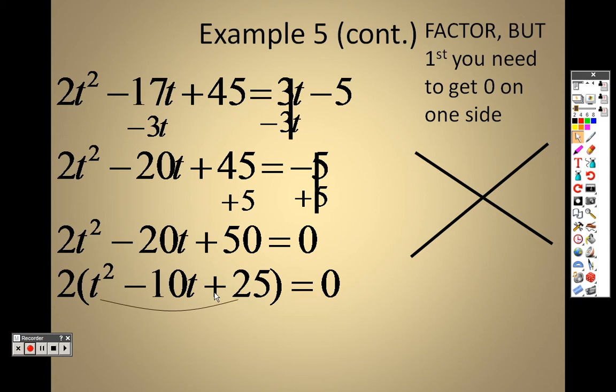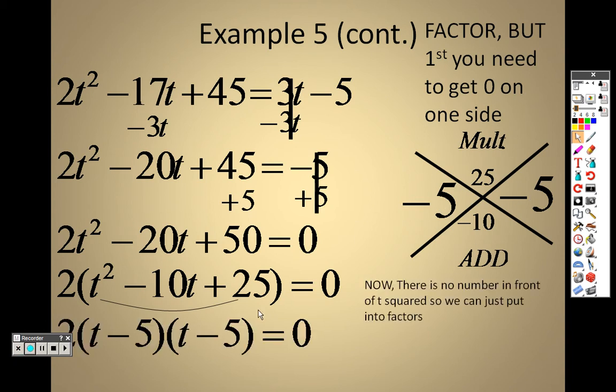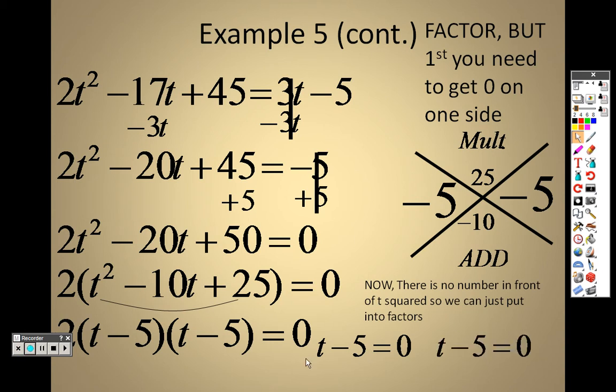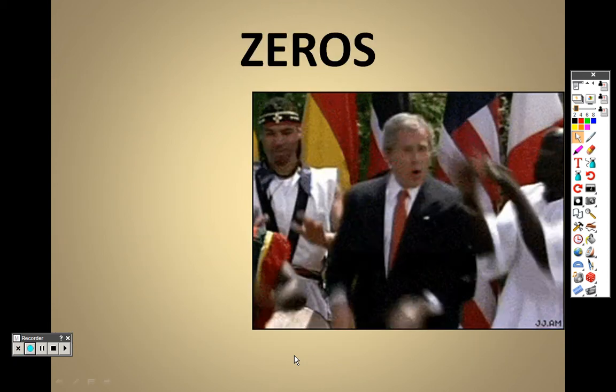The reason I do that is, what two numbers, 1 times 25 multiply to give me 25, that adds to give me negative 10. Well, negative 5 and negative 5 do. Negative 5 times negative 5 is 25. Negative 5 plus negative 5 is negative 10. So when I set it up, it's t minus 5 and t minus 5 with the 2 on the outside. So when I separate this to solve, it would just be t minus 5 equals 0. So I add 5 to both sides, and I find out that t equals 5 is my answer.